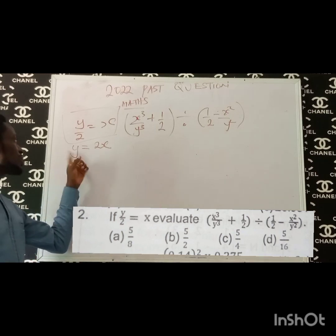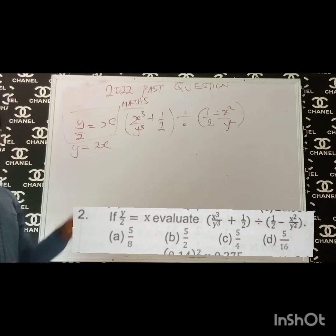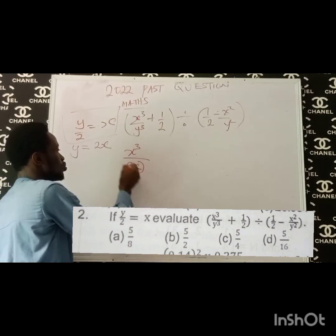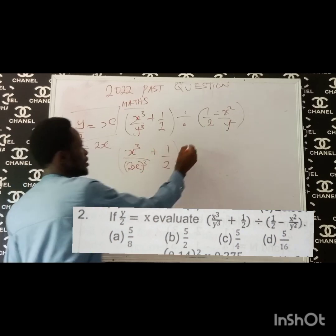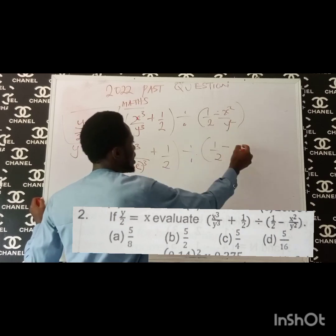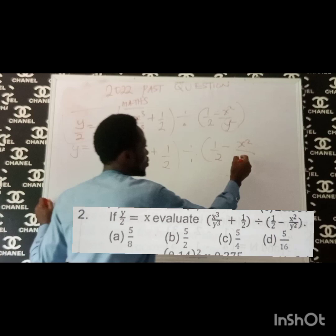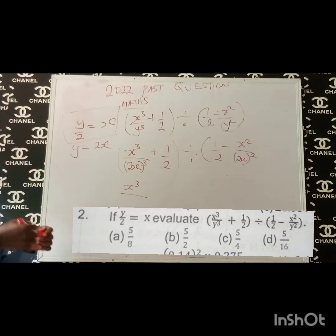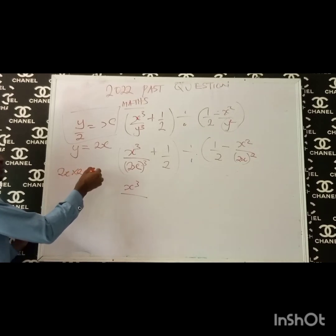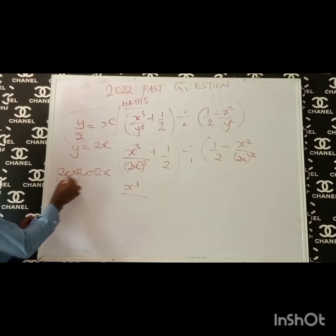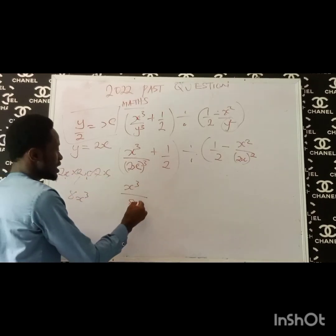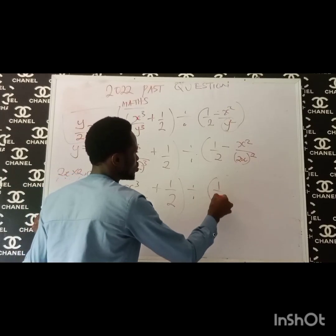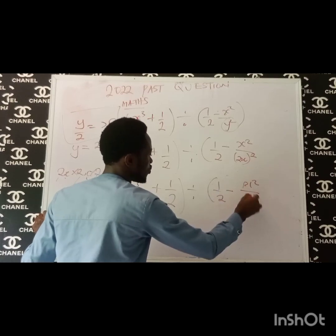The next thing I will do is to replace every y in this expression with 2x. So this is x cubed over y — I will replace it with 2x. Remember it is y cubed. So 2x cubed plus 1 over 2, divided by 1 over 2 minus x squared over 2x squared. What we will have from here is x cubed over 2x cubed. Now 2x cubed is 2x times 2x times 2x. 2 times 2 times 2 is 8, and x times x times x is x cubed. So we have 8x cubed plus 1 over 2, all divided by 1 over 2 minus x squared over 4x squared.